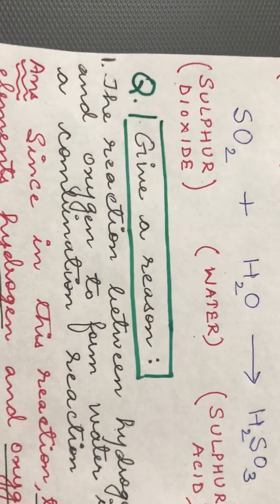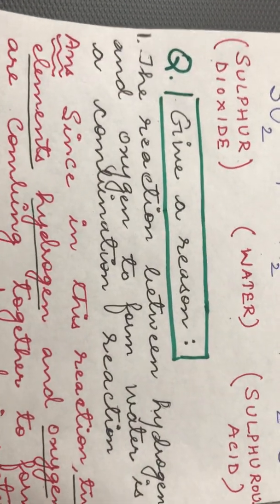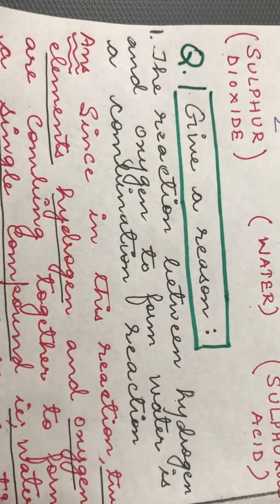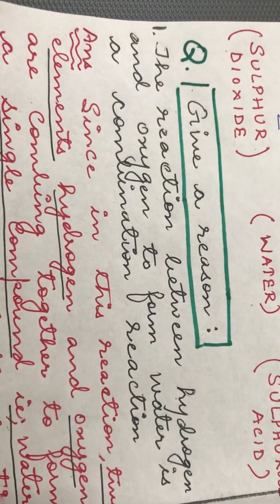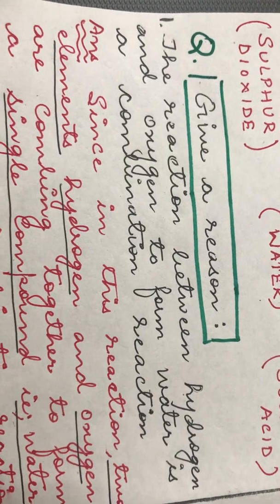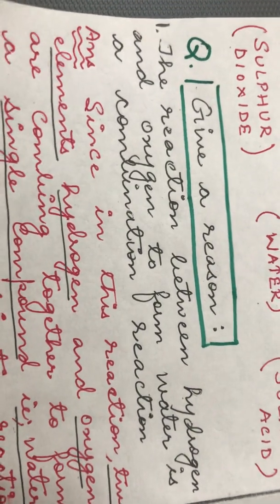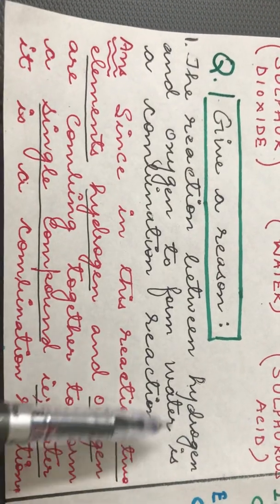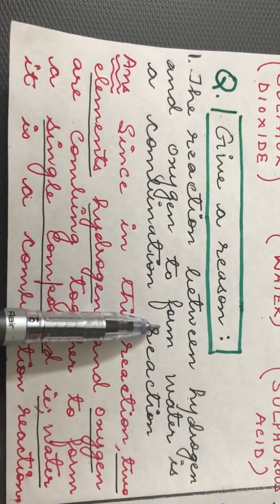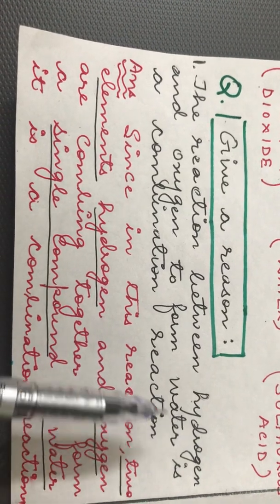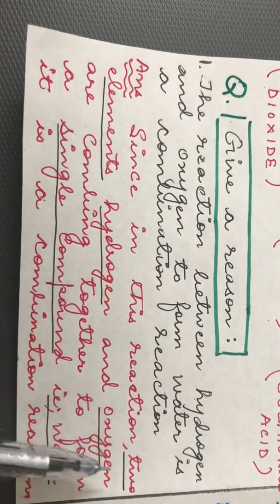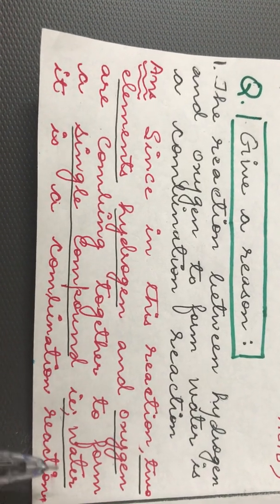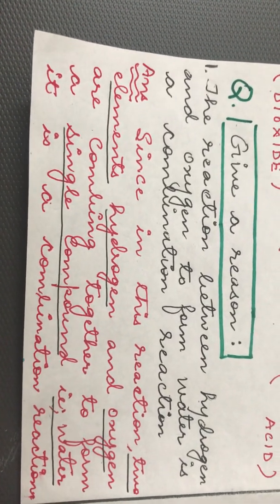Based on whatever we have studied today, here is a reasoning question. If asked: 'The reaction between hydrogen and oxygen to form water is a combination reaction — give the reason.' The answer is: hydrogen and oxygen are two elements combining to form water, which is a single compound. Since two elements are combining together to form a single compound, that is water, therefore it is called a combination reaction.